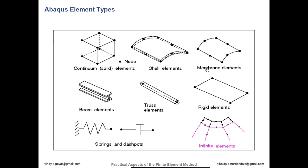For element selection: solid elements are ones where they're bulky and very difficult to approximate as thin shells. Anything you cannot approximate as shells, membrane elements, region elements, truss elements, or beam elements — you want to use solid elements. Anything that's thin in two directions should use shell elements. Anything that's only slender in one direction could be a truss element. If it carries moment, then you want to use a beam element; if it only takes axial load, then truss elements.